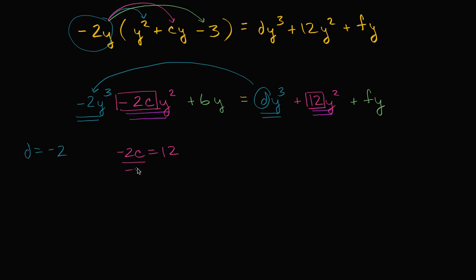To solve for c, we can divide both sides by negative two. And we get c is equal to 12 divided by negative two is negative six. And that makes sense.